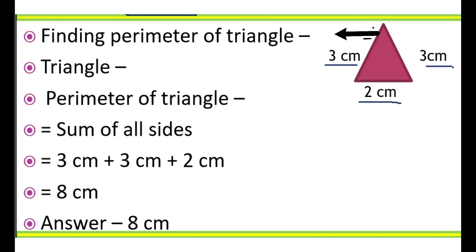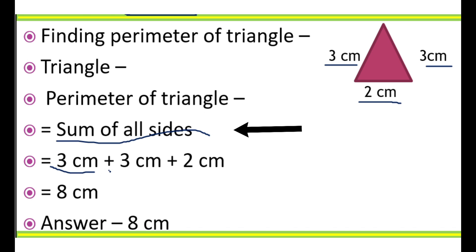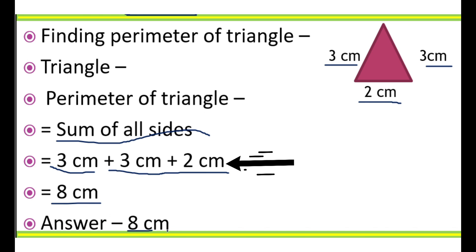Now let's find out the perimeter of a triangle. The formula to find the perimeter of a triangle is the sum of all sides, that is 1 cm plus 3 cm plus 2 cm plus 3 cm plus 2 cm, which equals 8 cm.